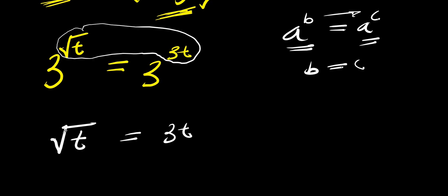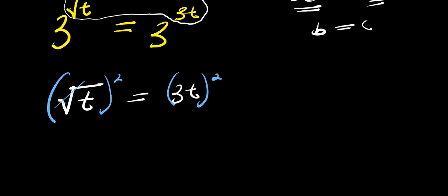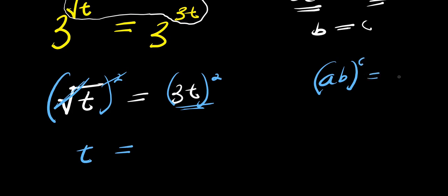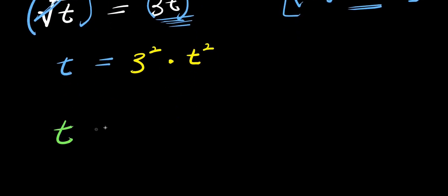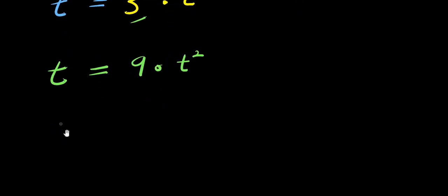So we have square root of t equals 3t. From here, you can decide to take the squares of both parts of this equation — that is how you can actually solve this in order to eliminate the square root. Squaring both sides, you get t on the left. On the right, applying the rule (a times b) raised to power c equals a^c times b^c, you get 3 power 2 times t power 2, giving t equals 9t squared.